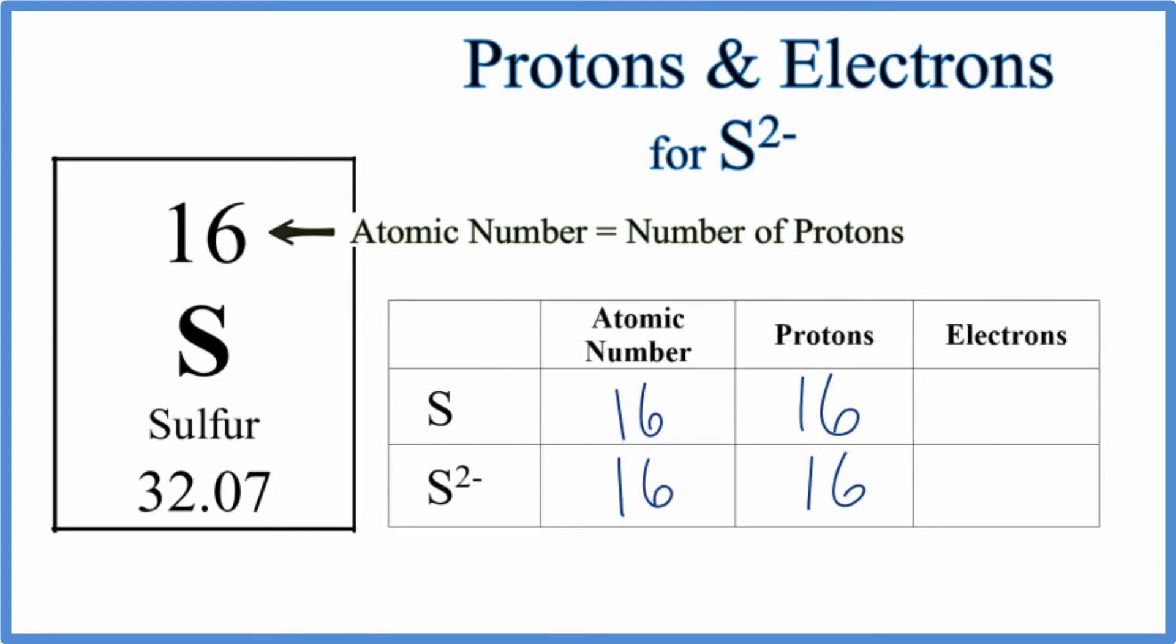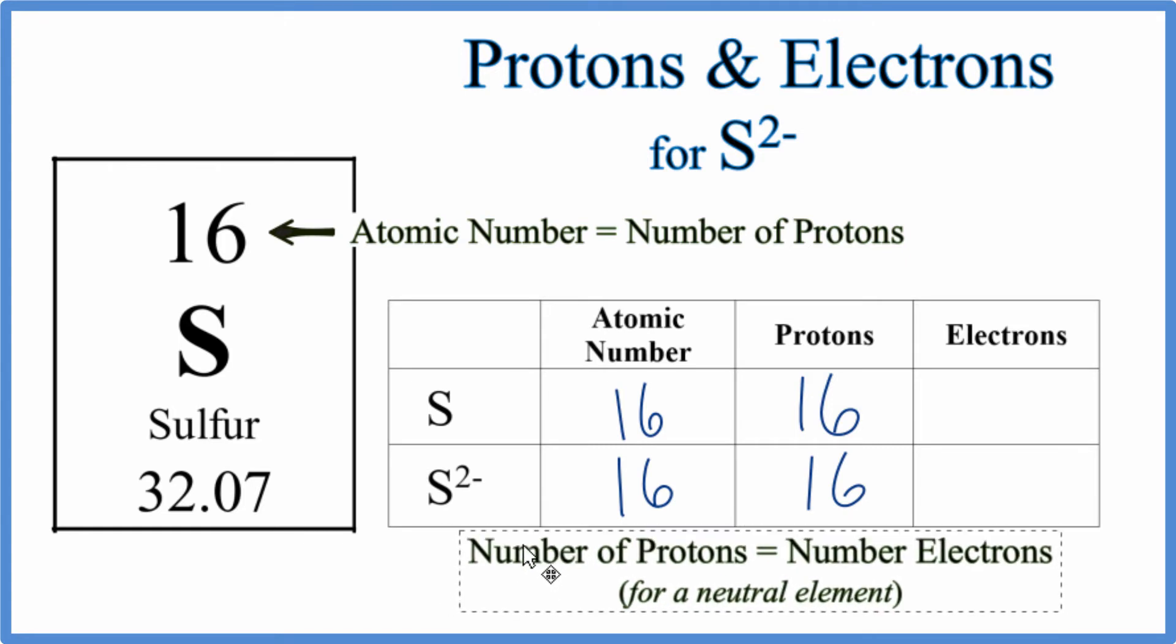Since sulfur is a neutral element, the number of protons equals the number of electrons, so we have 16 electrons. That makes sense—the negative and positive charges add up to zero, giving it a net charge of zero.